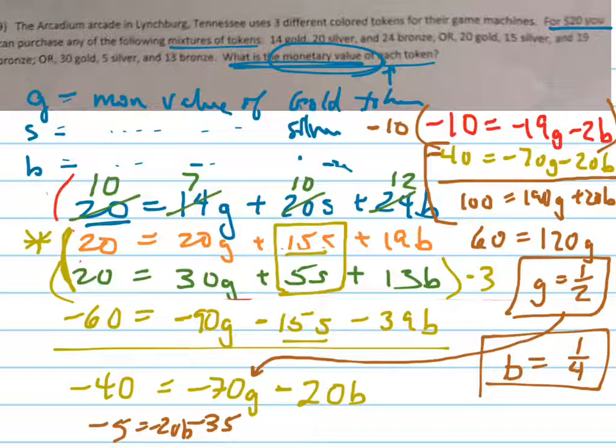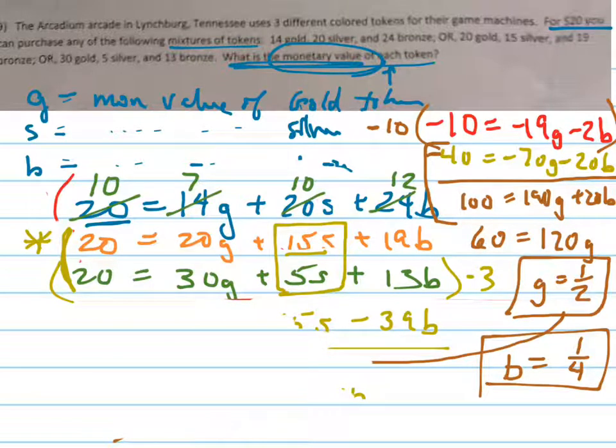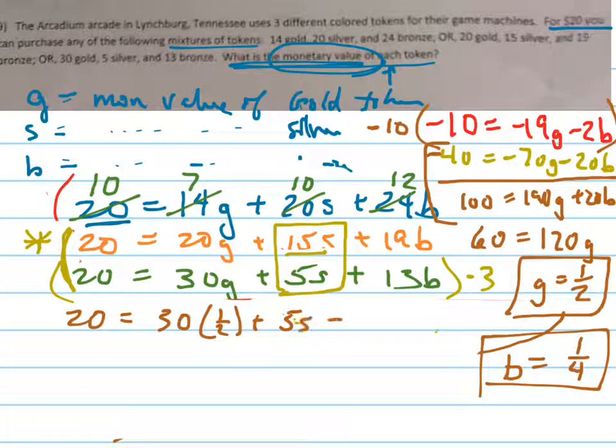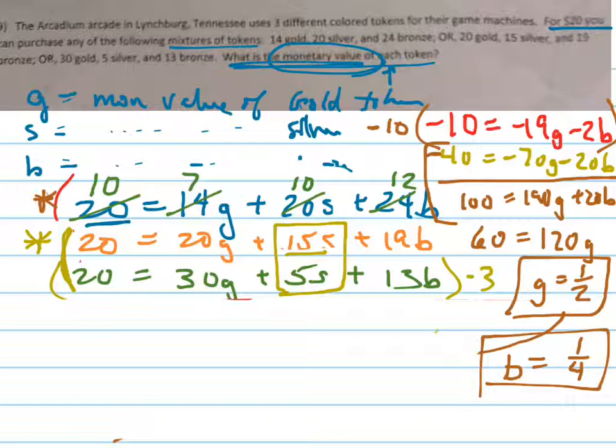And finally, I'm going to plug in 1 half and 1 fourth in for G and B respectively into anything that I want. So let me just erase all of this. And I'm going to plug those into this bottom equation, this green one. So my new green equation would become 20 equals 30 times 1 half plus 5S plus, oh, that's not a good choice because 1 fourth, that's not going to be as easy to find. I'm going to change my plan. Notice you can plug it into anything that you want. I'm going to plug it into this top blue one up here. In fact, the one with the green up here, the 10, 7, 10, 12. So let me just rewrite that. 10 equals 7G plus 10S plus 12B.